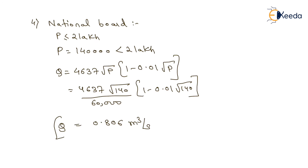The discharge according to the National Board formula is 0.806 meter cube per second. We computed: Kuchlings formula gives 0.627 m³/s, Freeman's formula gives 0.454 m³/s, Buston's formula gives 1.116 m³/s, and National Board formula gives 0.806 m³/s. Among all these four formulas, the Kuchlings formula is the best for computation of fire demand. We have completely described all the steps of this numerical. Thank you very much.